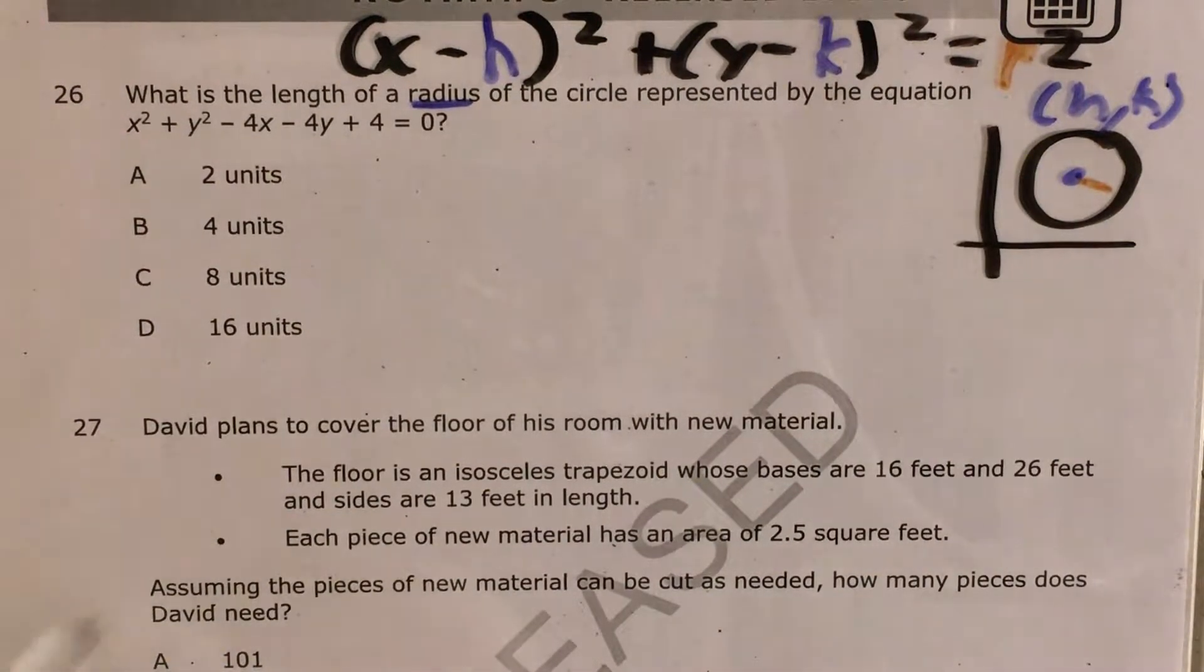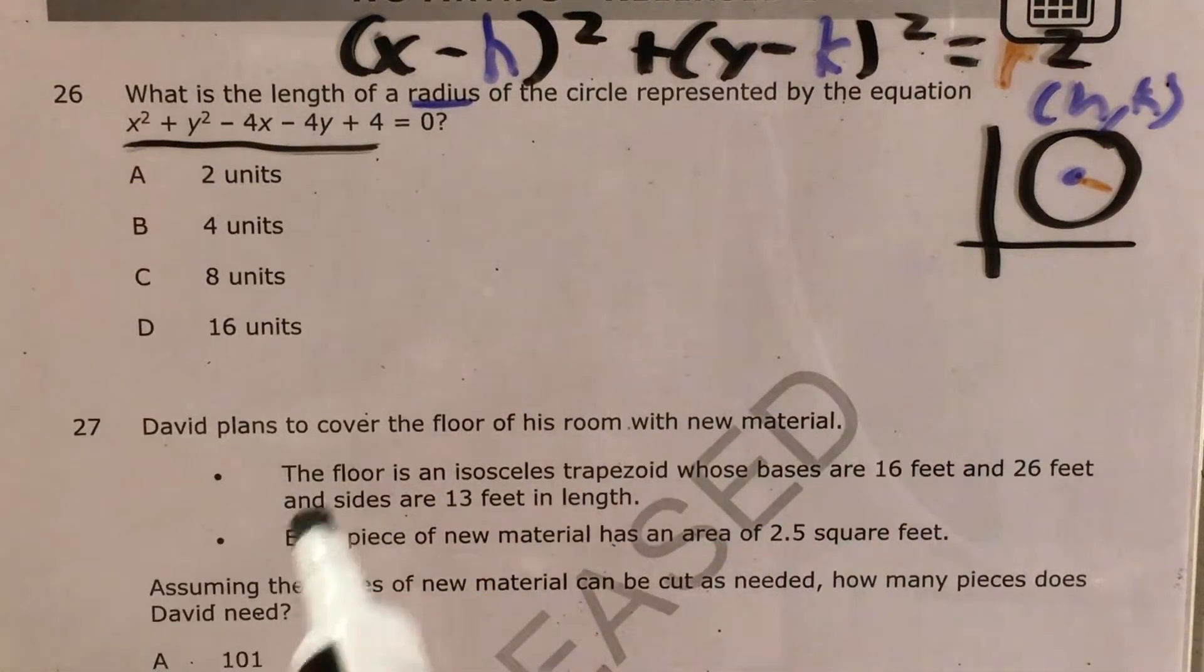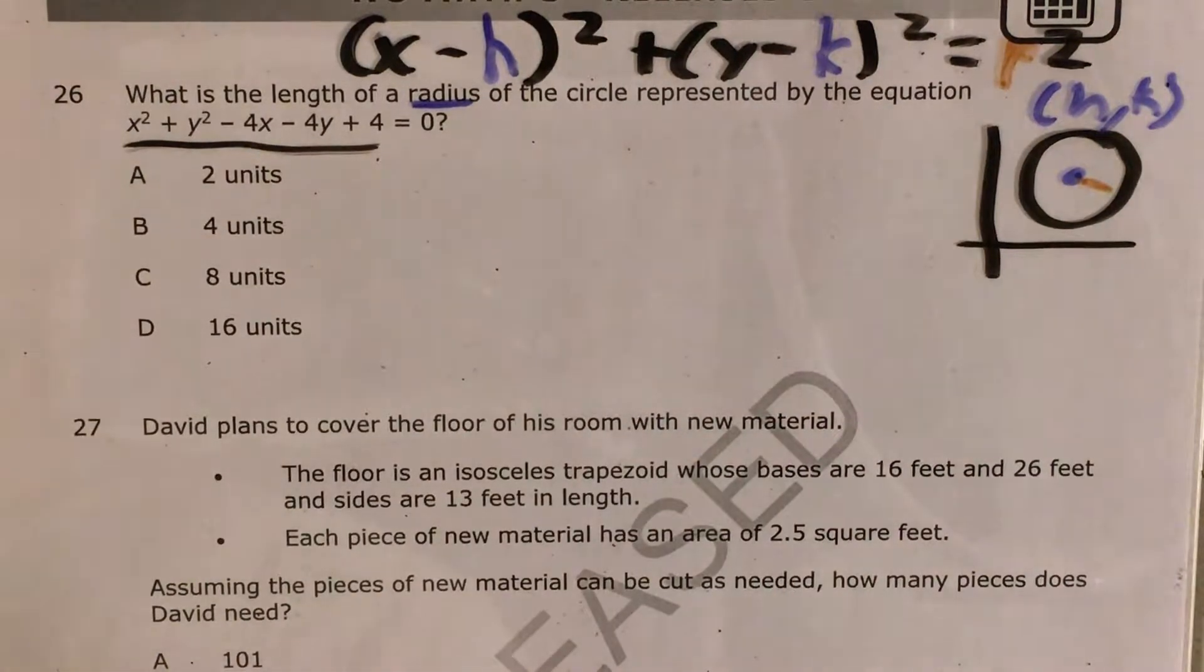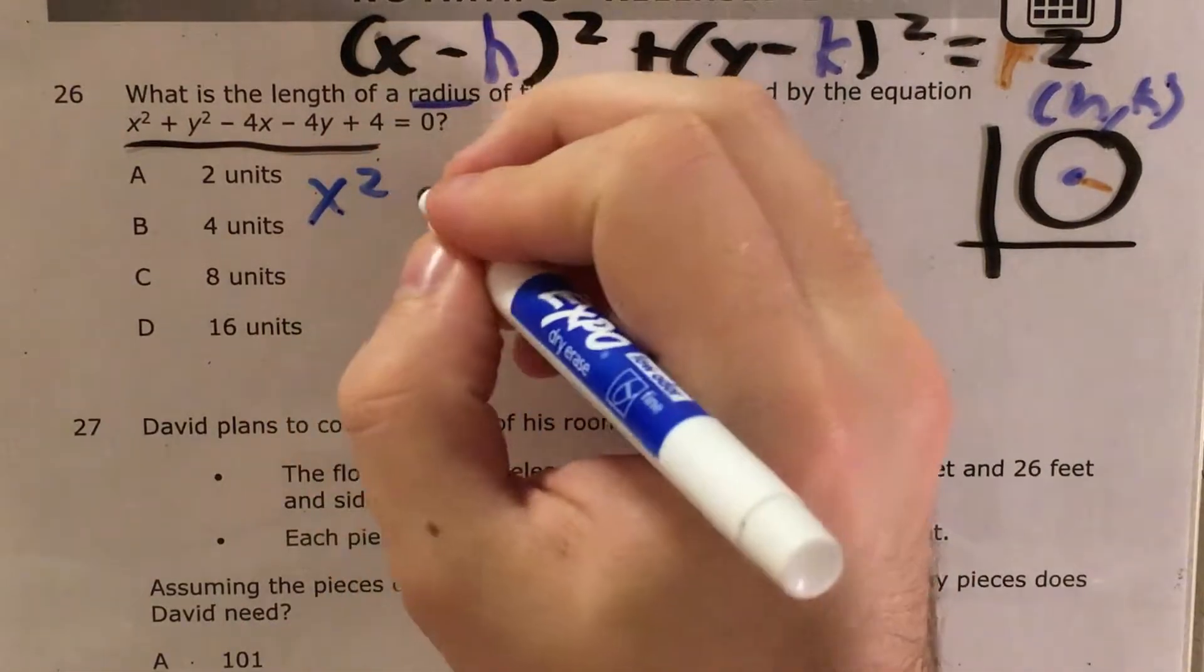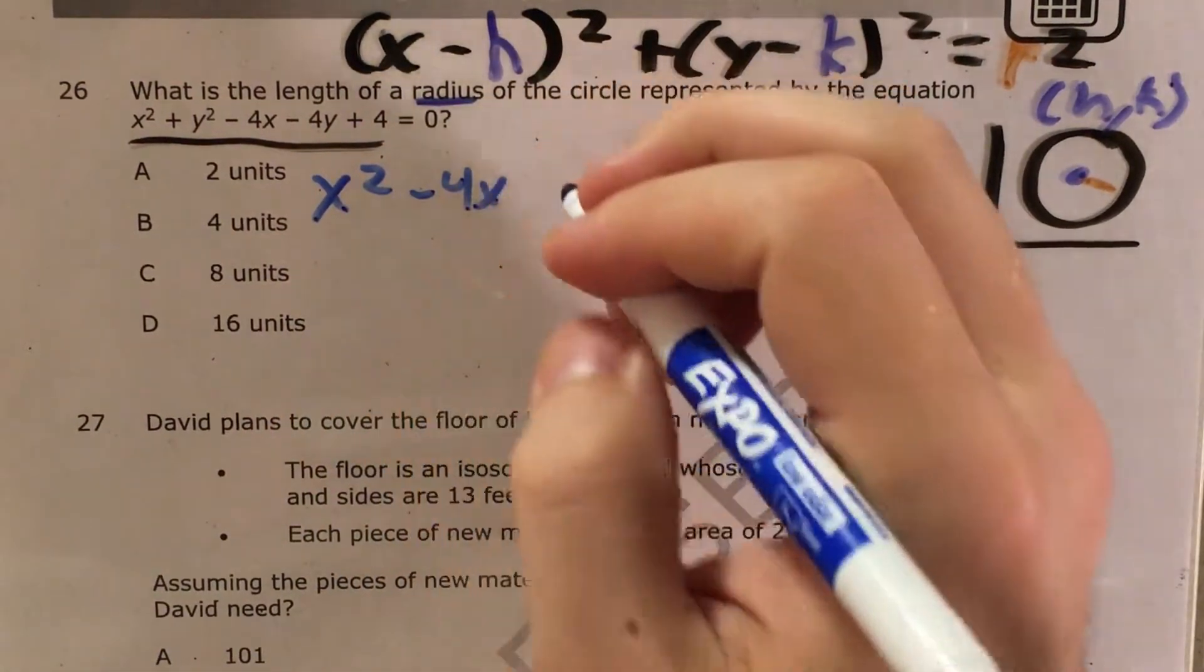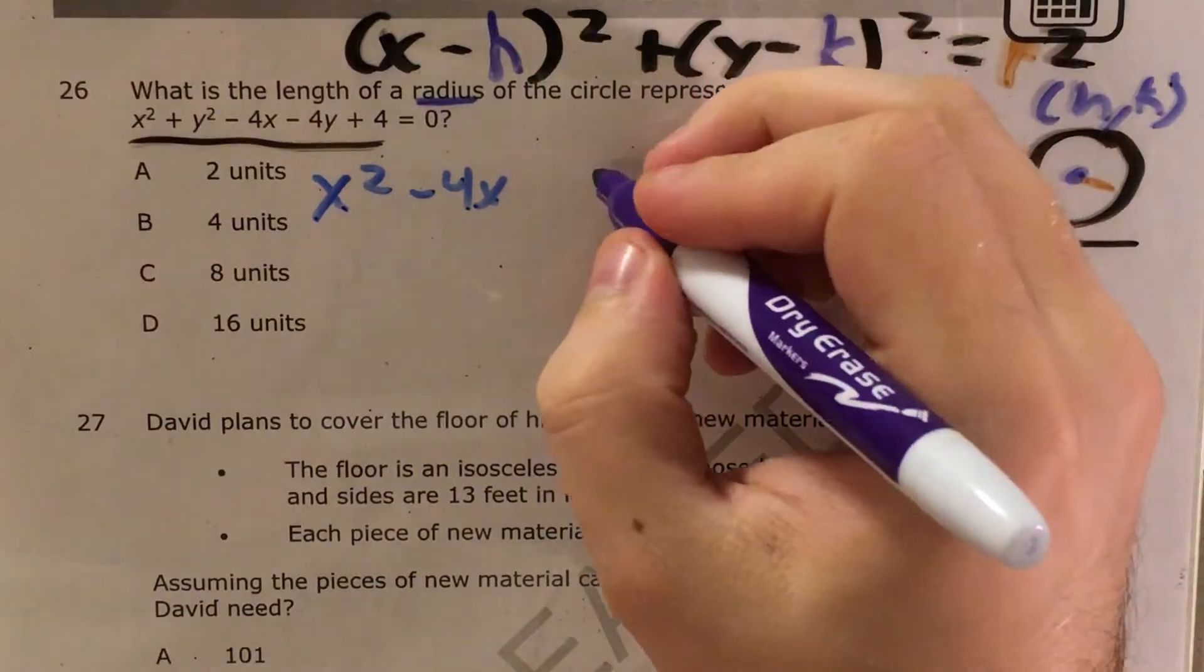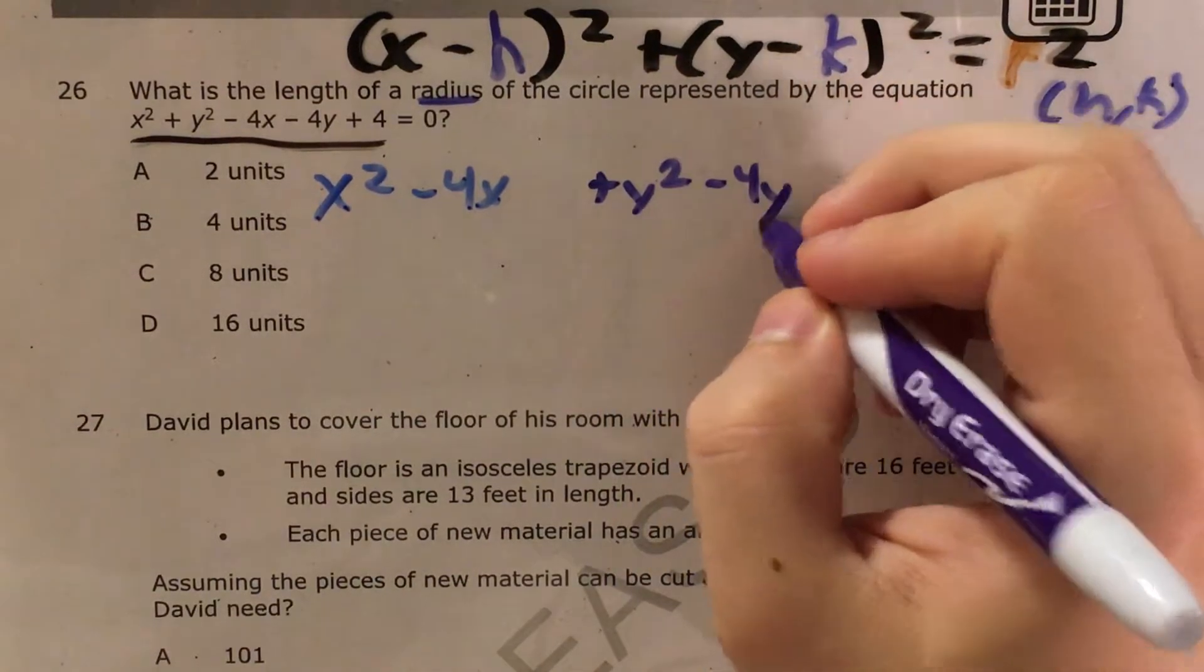I'm going to start actually by rewriting this, not changing anything, just the order that I'm writing stuff in. x squared minus 4x, and I'll leave some space, plus y squared minus 4y, and I'll leave some space.